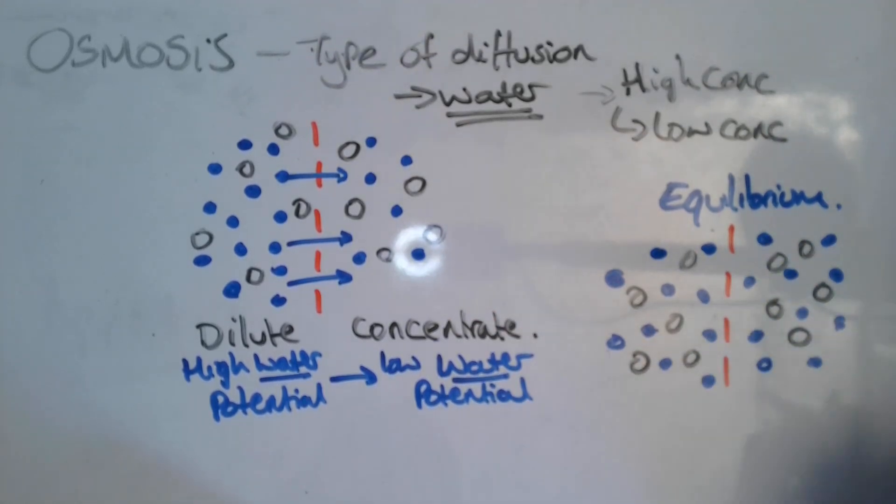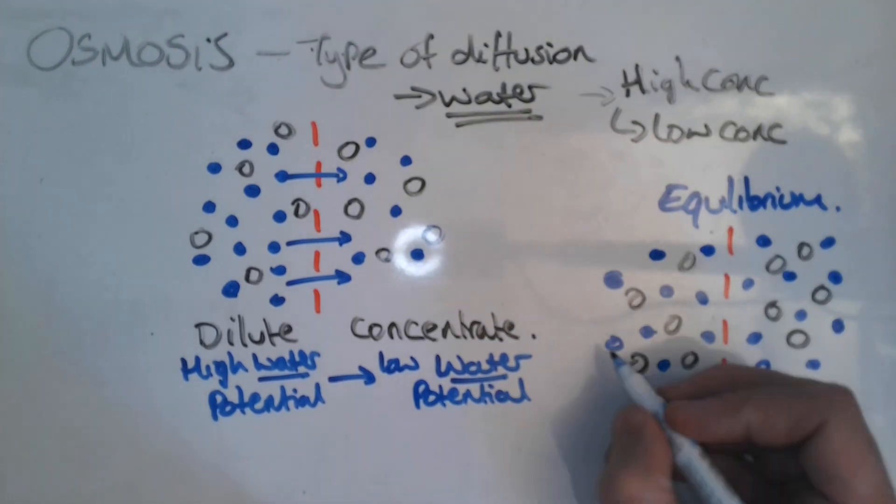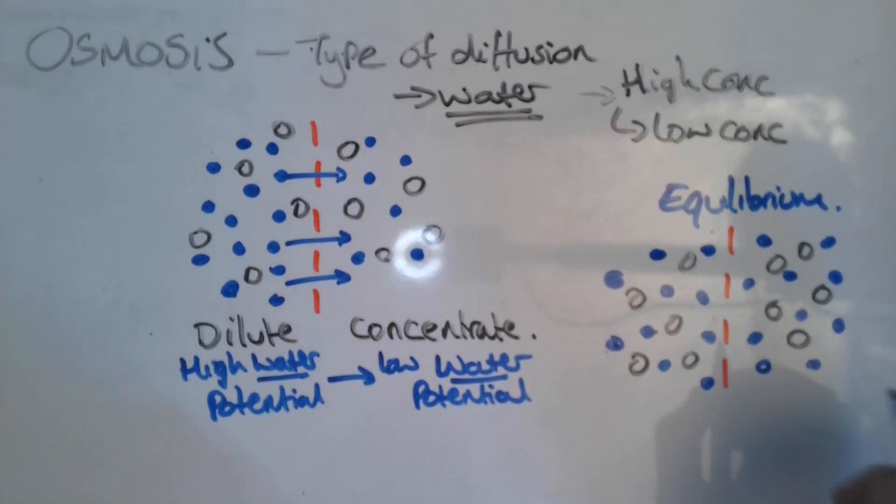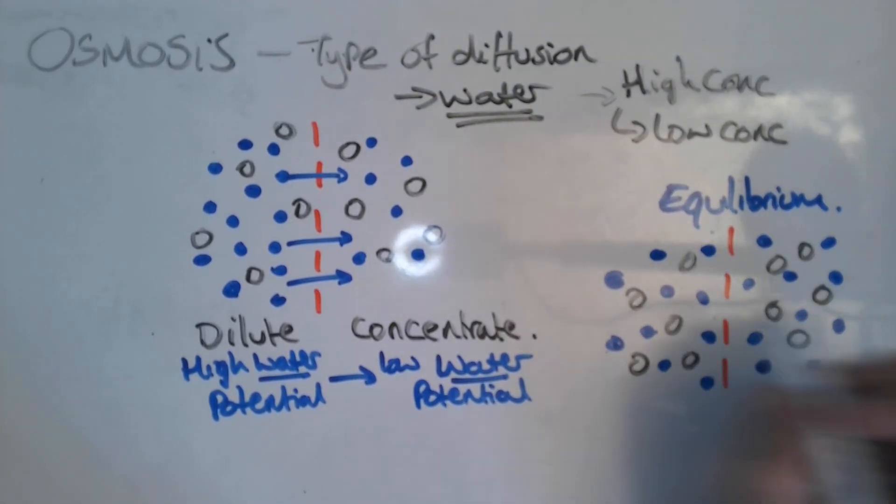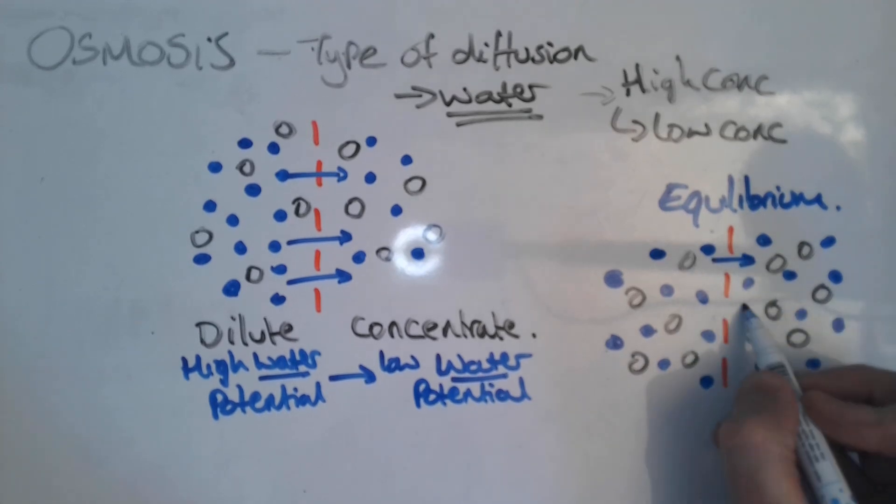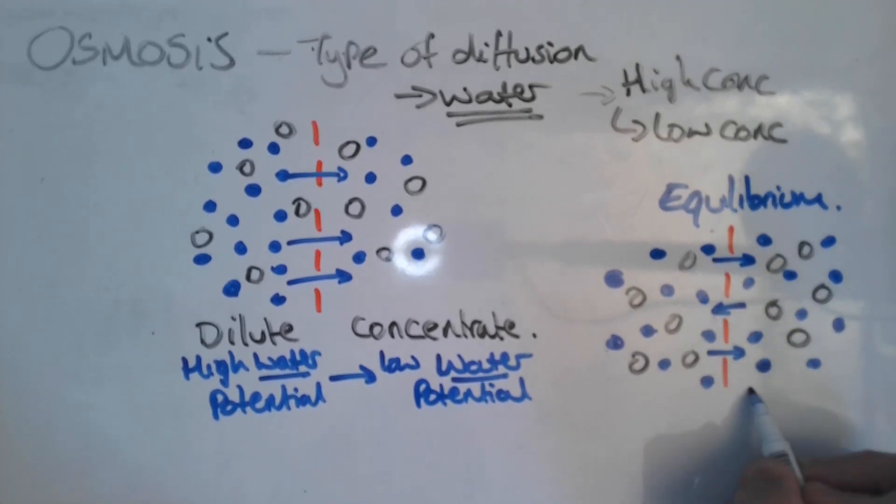So you can see it's equaled out. Now what's really important to note here is the water doesn't stop moving at this point, it doesn't stop diffusing across. But the rate of diffusion is going to be the same in both directions, so the overall concentration on either side is going to remain the same. The amount of water on either side is going to remain the same, the amount of solutes on either side is going to remain the same, so therefore the overall concentration is going to remain the same. And this is what we mean by the term equilibrium.